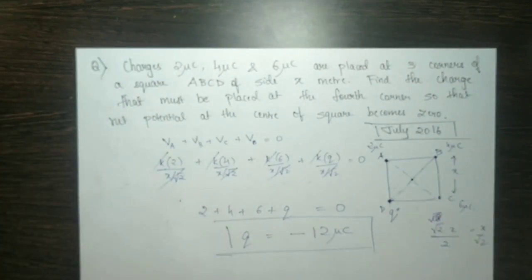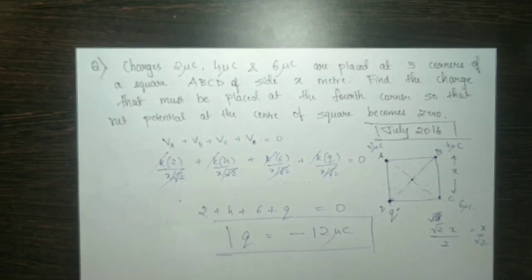The net potential at the center is zero when q equals minus 12 microcoulombs. Thank you for watching this video.